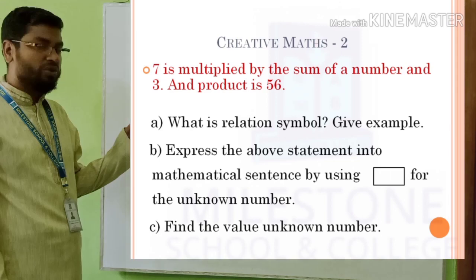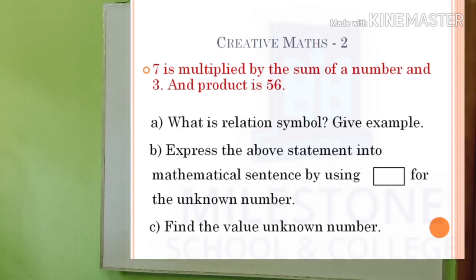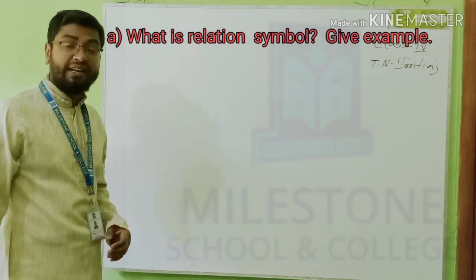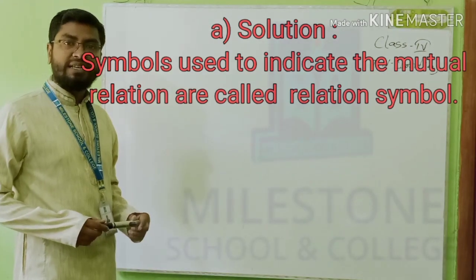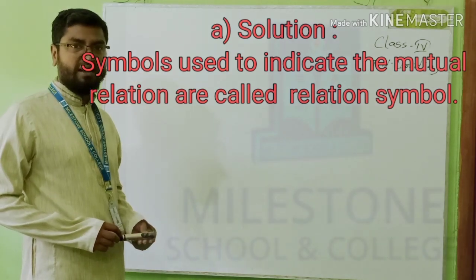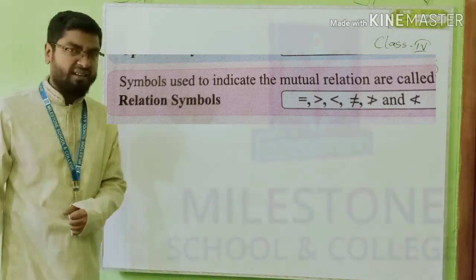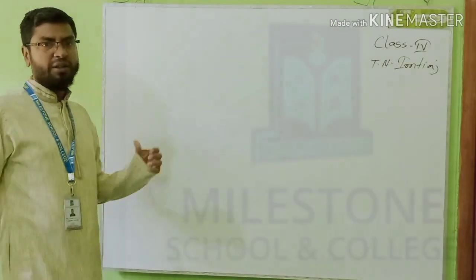Solution number A. The question is: what is the relation symbol? Solution: symbols used to indicate the numerical relation are called relation symbols. Equal, not greater than, not less than — these are examples of relation symbols.